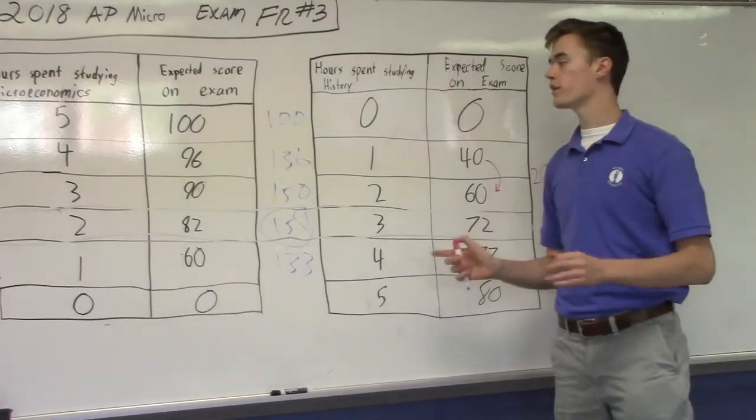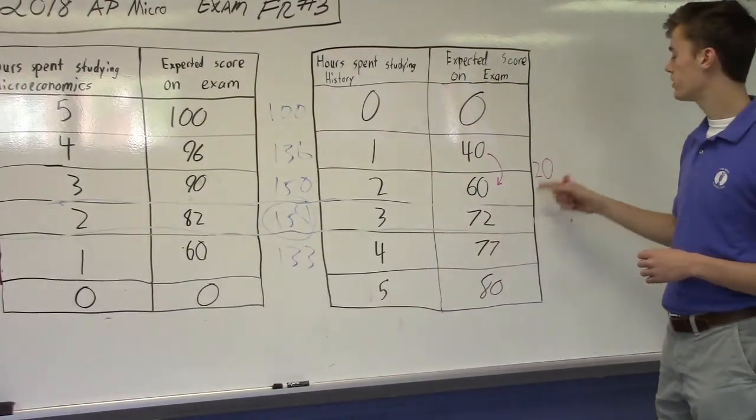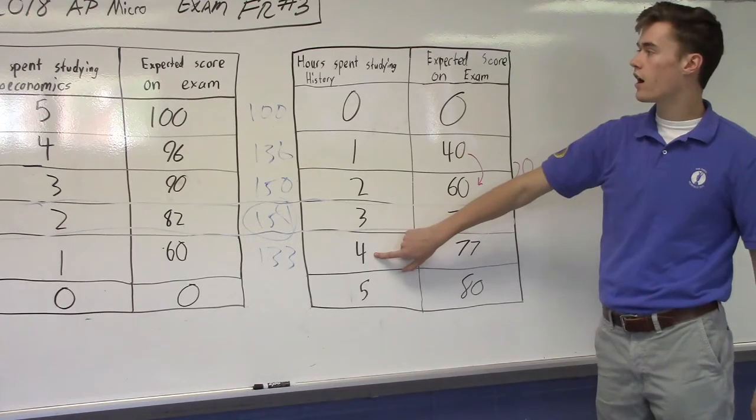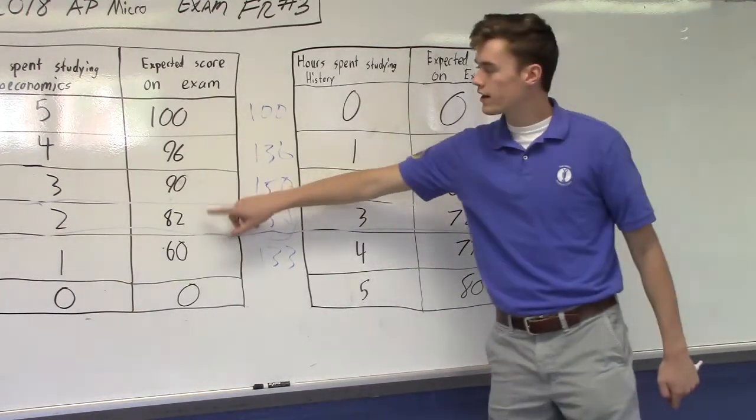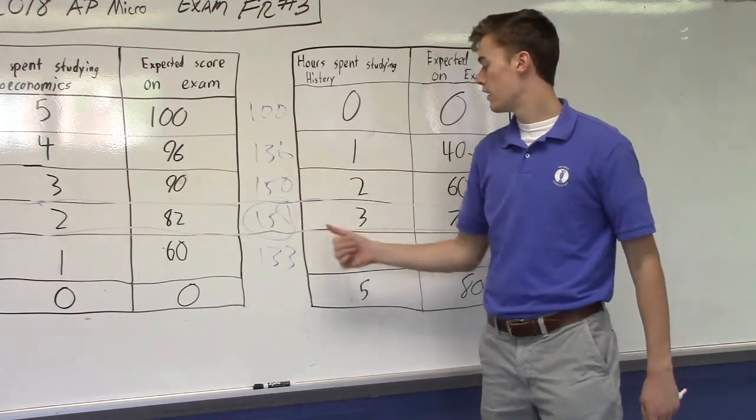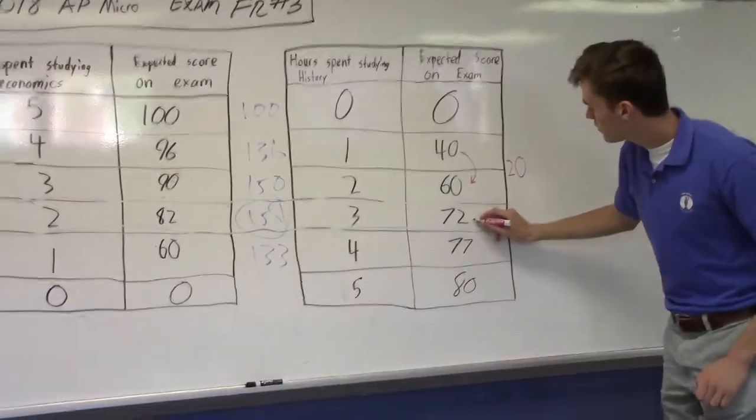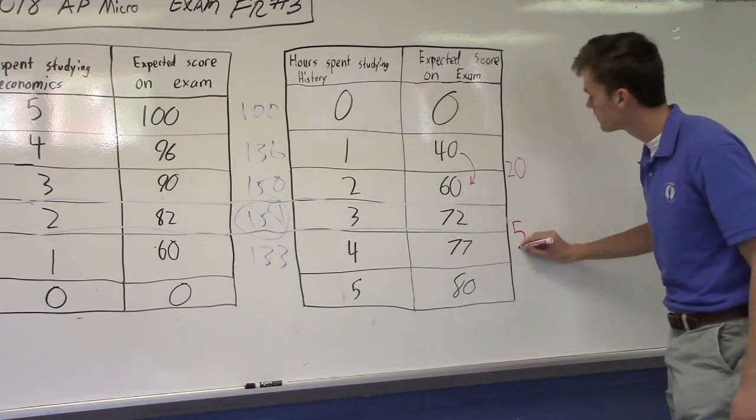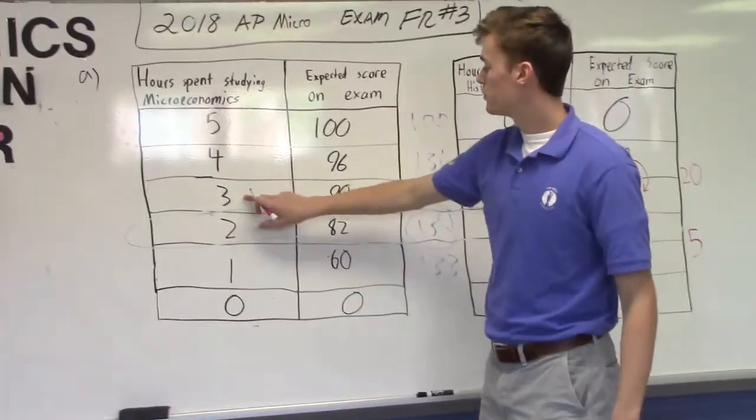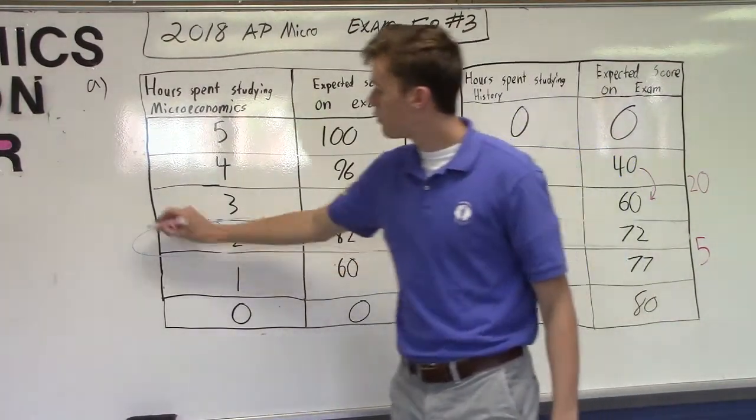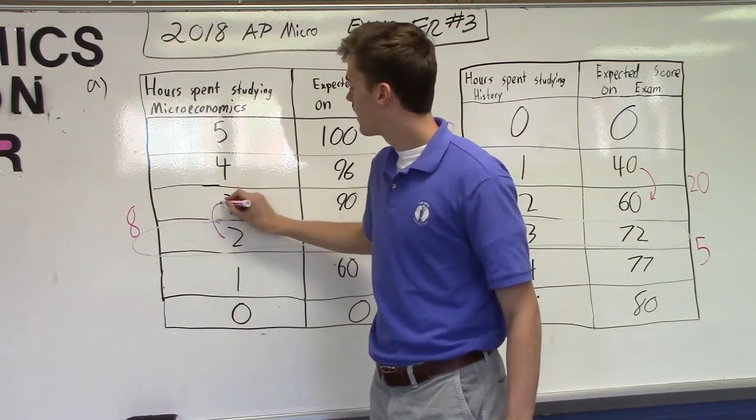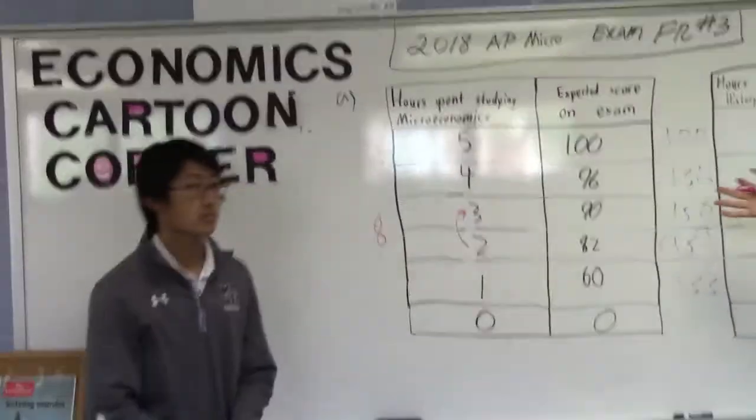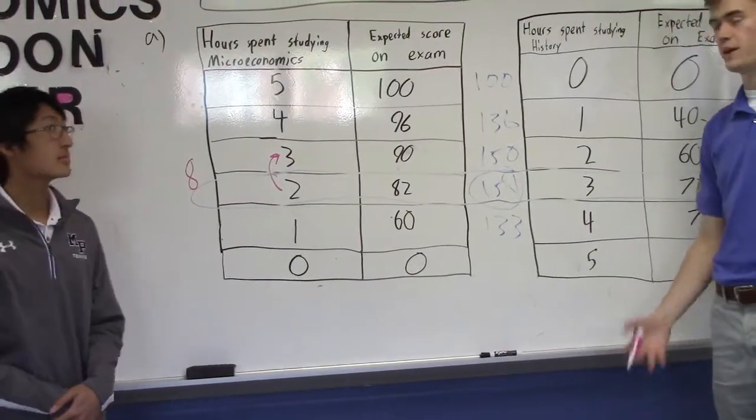Alright. So we're right back looking at marginal benefit, the same we did on the, or marginal utility, the same we did as the first question. So we can either allocate the hour here and go four hours with history and two for economics, or the hour here and go to three hours for economics and three hours for history. So we look, we see we gain five points when we spend the additional hours studying history, so the marginal utility is five. We go over here, we go from two to three, it looks like we gain eight points, so the marginal utility for this is eight points. Now we compare eight and five, and it's clear that you want to spend the additional hour spent studying microeconomics, which I think would make Mr. Ostick pretty happy.